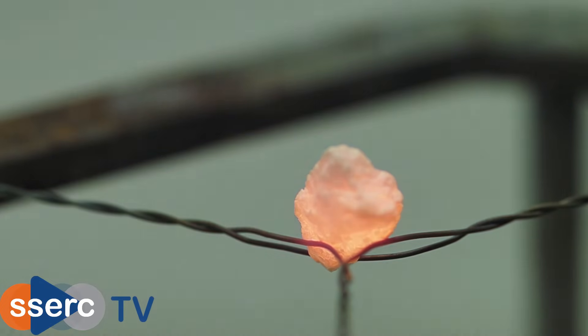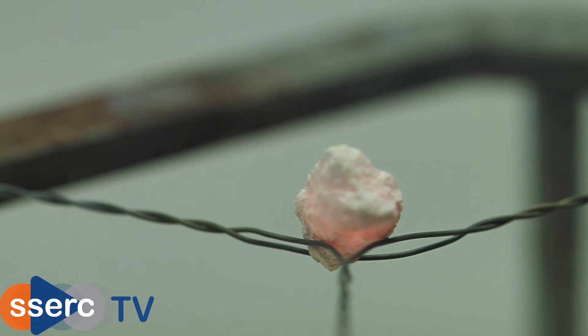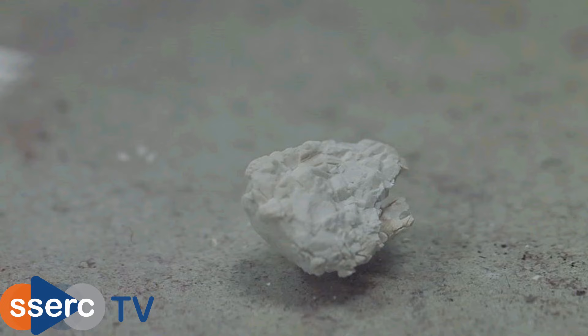After about 10 minutes turn off the heat and allow the marble chip to cool. If you look carefully you will see that it looks a little bit different. It's less shiny and if you handle it you will find that it is now quite crumbly.